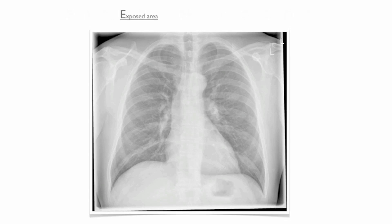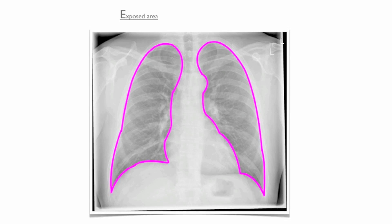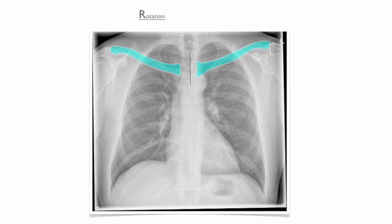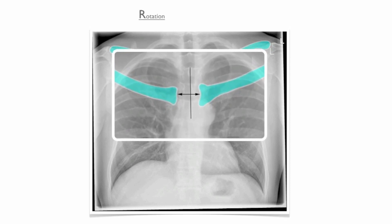Exposed area: you must be able to see all of the lung zones on the radiograph. If you cannot see them, you will not be able to make a reliable diagnosis. The next step is to assess rotation. This can be done by looking at the medial edges of the clavicles and drawing a line through the adjacent spinous processes. The distance between the edge of the clavicles and the line should be equal on each side. If the distances are unequal, this suggests that rotation is present.